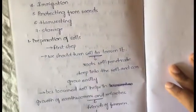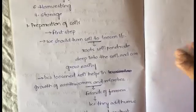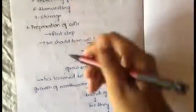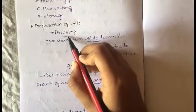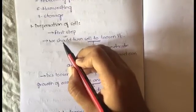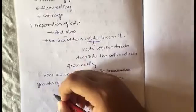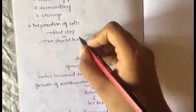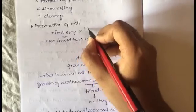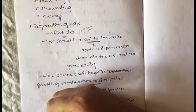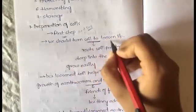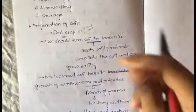In this video we'll see the first step, and in later videos we'll go through the remaining steps. The first one is preparation of the soil. Preparation of the soil is the first and also a very important step in cultivation. So what do you mean by preparation of soil? Preparation of soil is turning the soil to loosen it.